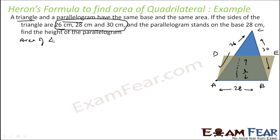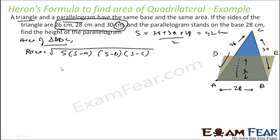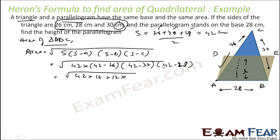Since the areas are equal, we first find the area of triangle ABC. The sides are 26, 30, and 28, so S = (26 + 30 + 28) / 2 = 42 cm. The area is root of S(S−A)(S−B)(S−C) = root of 42 into (42−26) into (42−30) into (42−28) = root of 42 into 16 into 12 into 14, which gives 336 cm².